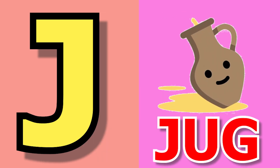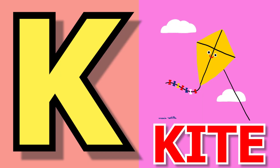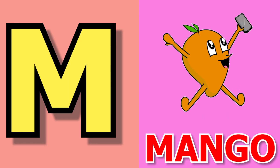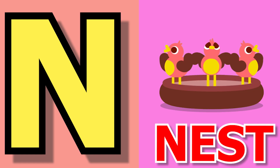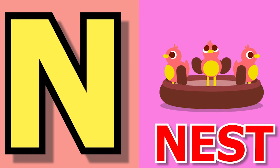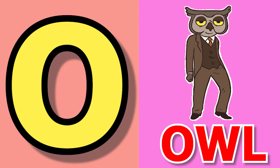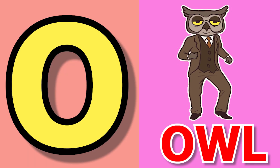J for jag, jag means jag. K for kite, kite means patang. L for loyan, loyan means share. M for mango, mango means aam. N for nest, nest means ghosla.